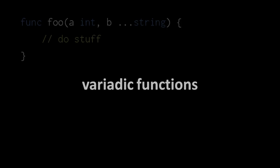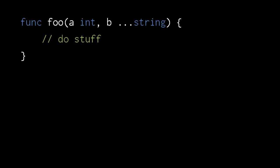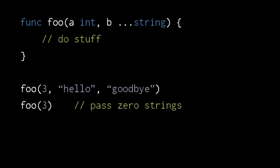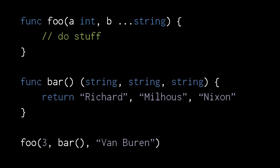A variadic function is a function that takes a variable number of arguments. In Go, the last parameter of a function can be a slice specially denoted by three dots instead of square brackets. The arguments for this parameter are zero or more strings at the end, and these arguments become the values of the slice. If a function returns multiple values, the function can be used to provide arguments to a variadic function if the return values all match the expected type. Here we're calling foo with four strings, the first three returned from the call to bar.